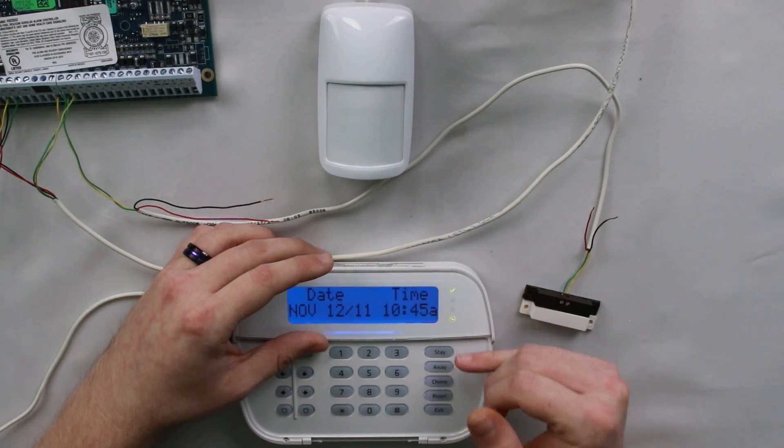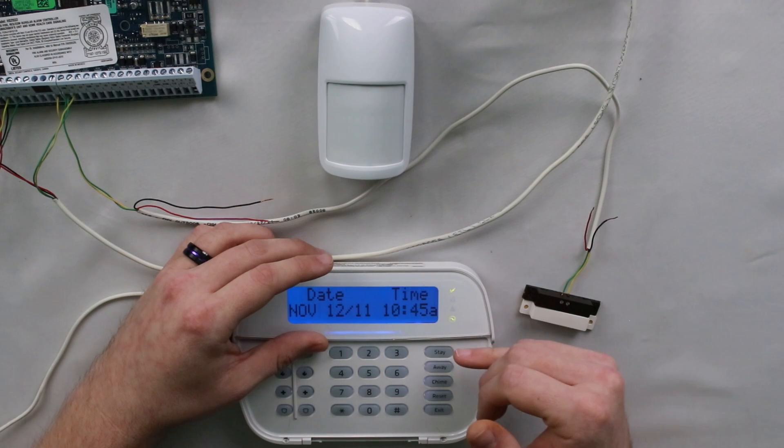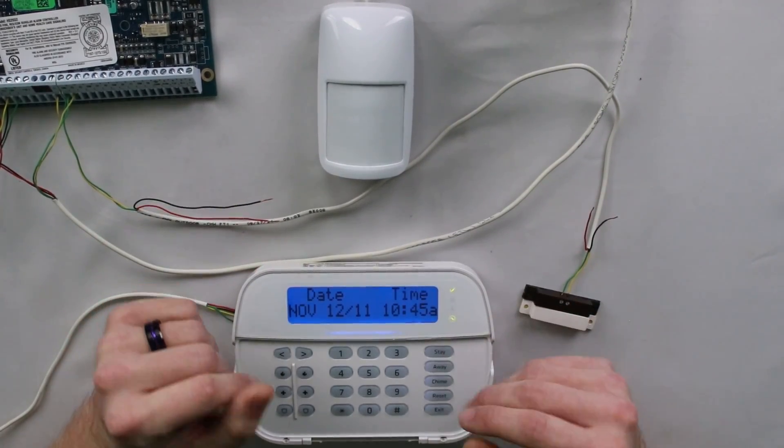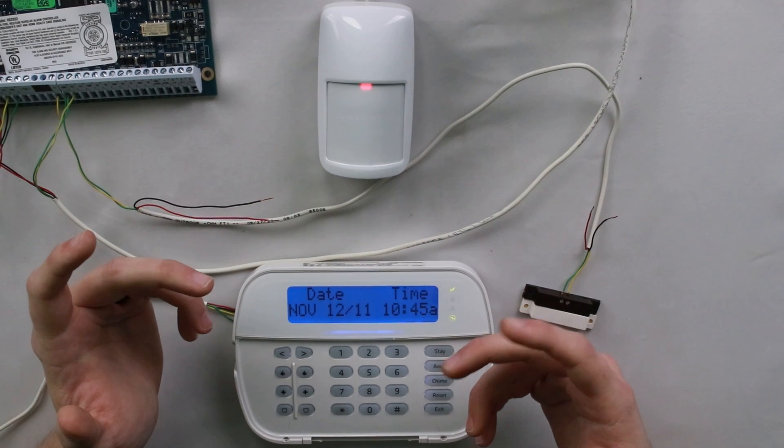The only difference about these buttons as compared to typing in your code is if you hold the stay key and use it, it is going to count down silently. You're going to get an initial beep, but it will not do the beep, beep, beep as it counts down to let you know that it's time to leave.